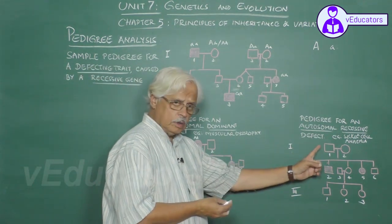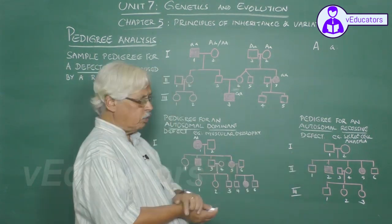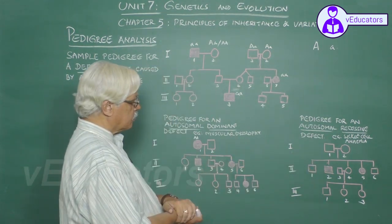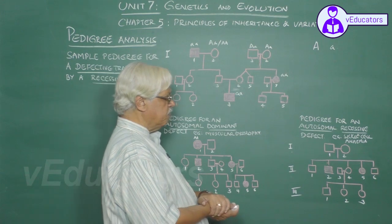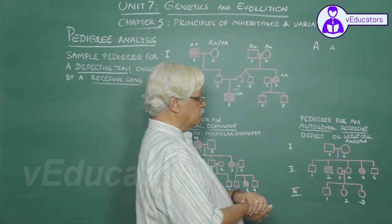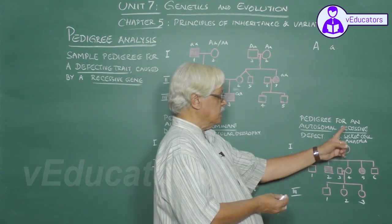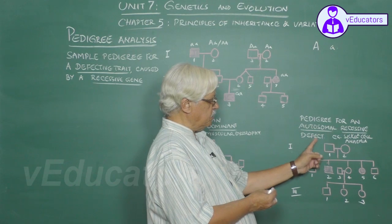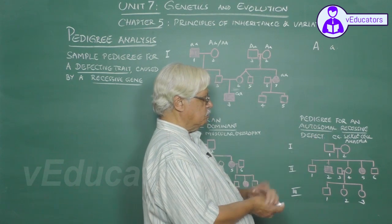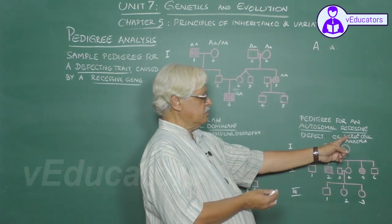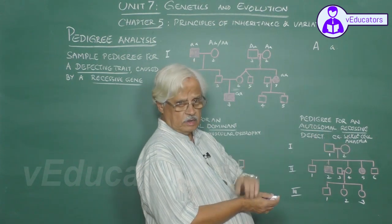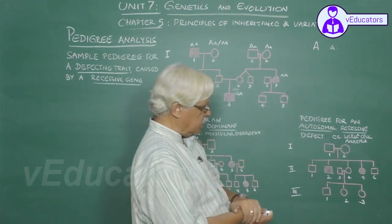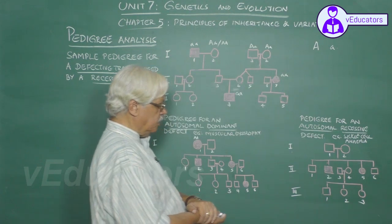The third is a pedigree for autosomal recessive defect. The second is sickle cell anemia. So, we are going to talk about this.